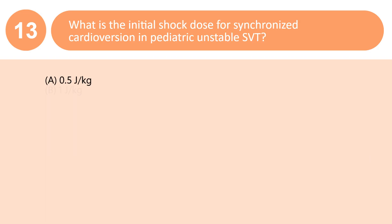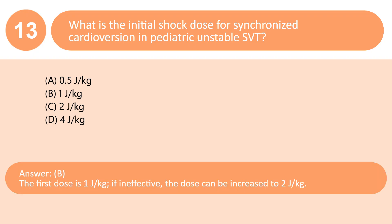What is the initial shock dose for synchronized cardioversion in pediatric unstable SVT? A. 0.5 J/kg. B. 1 J/kg. C. 2 J/kg. D. 4 J/kg. Answer: B. The first dose is 1 J/kg; if ineffective, the dose can be increased to 2 J/kg.